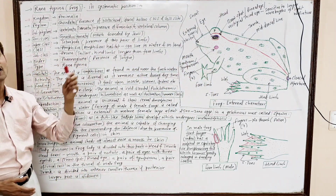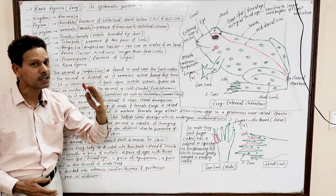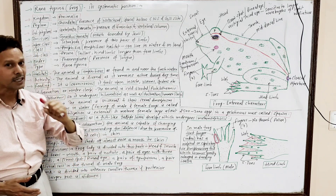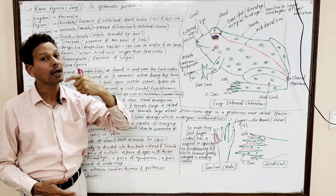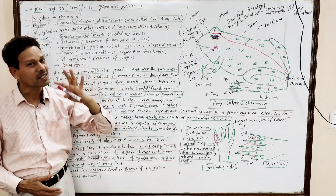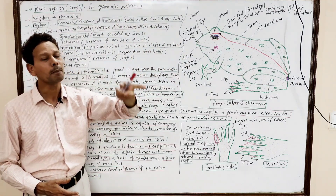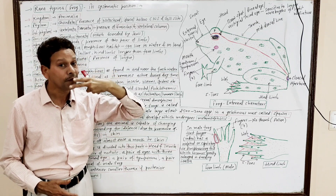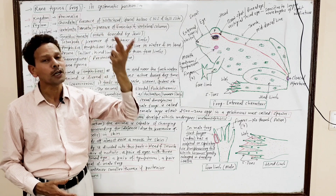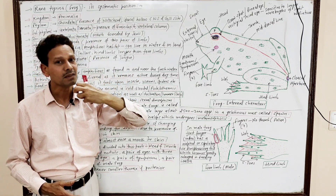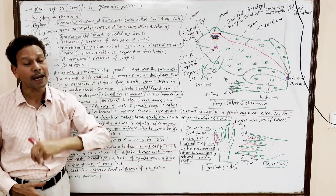Order: Phaneroglosa. Phaneroglosa means presence of a tongue. The characteristic feature of the tongue is: in the case of man, the anterior part of tongue is free. But in the case of this animal, frog Rana Tigrina, the posterior part of tongue is free. The anterior part gets fixed by a lingual frenulum, but the posterior part of the tongue is free and sticky in nature to capture insects, worms, and spiders.